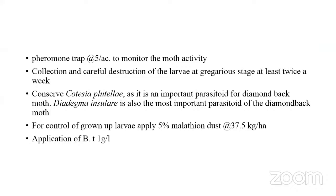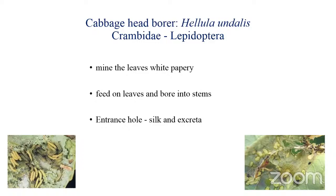For management, set up pheromone traps to monitor moth activity. Collect and destroy gregarious larvae. Conserve natural enemies Cotesia plutella and the larval parasitoid Diadegma insulare. Spray malathion dust. Note that this pest is known to be resistant to most insecticides. You can also apply Bacillus thuringiensis.